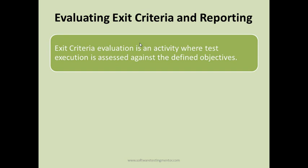Test execution is assessed against the defined objective. In test planning, we discussed that you define the exit criteria — what criteria your test execution should fulfill — only then can you exit any test phase. For example, no high severity or critical severity defects should be open; all of them should be fixed, verified, and closed. You evaluate whether the execution actually meets the exit criteria.